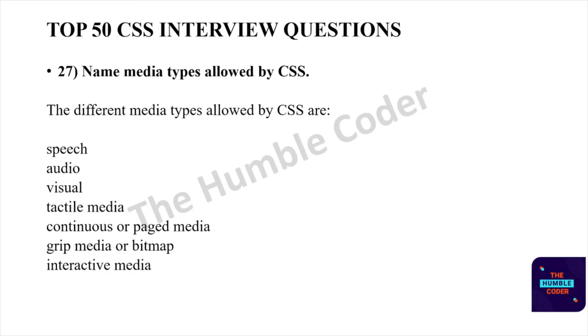Name the media types allowed by CSS. The different media types allowed by CSS are speech, audio, visual, tactile media, continuous or paged media, grid media or bitmap, and interactive media.